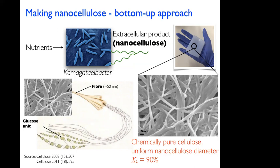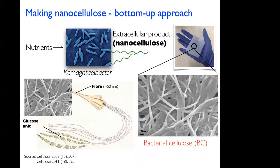The main difference between nanocellulose produced by bacteria and nanocellulose from wood is purity. Bacterial cellulose is chemically pure cellulose without any traces of hemicellulose or lignin, whereas wood-derived nanocellulose typically contains a little hemicellulose and maybe traces of lignin. The uniformity of bacterial cellulose is governed by the genetic content of the bacteria, so it always produces very uniform nanocellulose of about 50 nanometers in diameter, and these nanocellulose are very highly crystalline — about 90% crystallinity. We shall call these 'bacterial cellulose' for today's presentation.